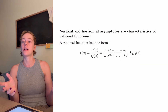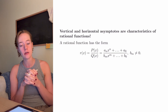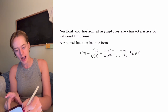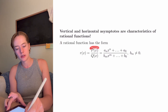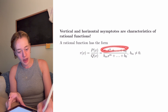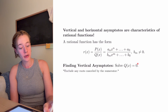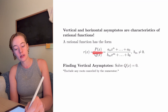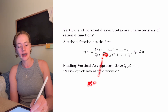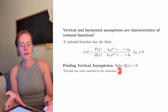Now that we know what vertical and horizontal asymptotes are and how they're defined, we need to figure out how to calculate them. Typically, when you're talking about vertical and horizontal asymptotes in a math class, you're talking about them in the context of a rational function — basically two polynomials divided by each other. To find vertical asymptotes, we set the denominator q(x) equal to zero, do some algebra, and find what x is equal to. That's the form of our vertical asymptotes: x is equal to something.